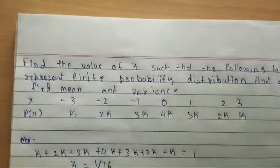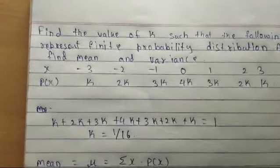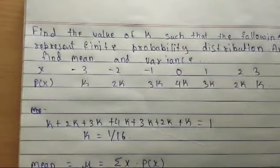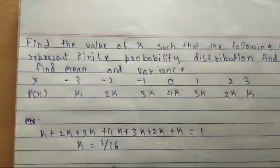To calculate the value of k, we should sum the k of all values. So after adding all k values, we are getting k is equal to 1 by 16. Next, we have to calculate mean.